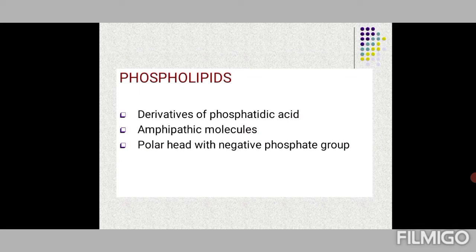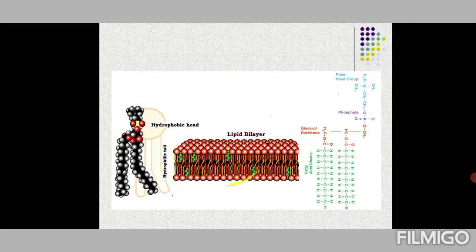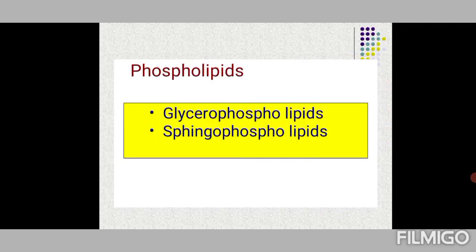Phospholipids are derivatives of phosphatidic acid, and they are amphipathic molecules, meaning they have a polar and non-polar end. Phospholipids form the integral part of the plasma membrane — the double lipid bilayer — along with proteins and cholesterol. This figure represents a phospholipid with the hydrophobic head and hydrophilic tail.